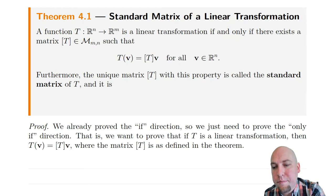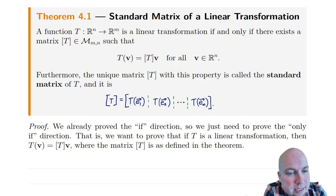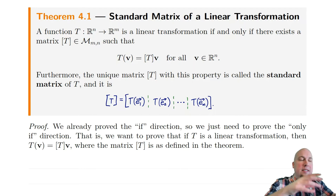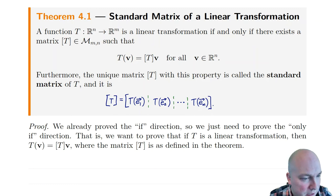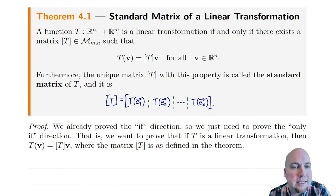The way to construct the standard matrix of T is to apply T to each of the standard basis vectors and then stick the results in as columns into a matrix. You compute T of E1, and that becomes the first column of your standard matrix. Then T of E2 becomes the second column, and so on, all the way down to T of En, which becomes the last column. The claim is that if you construct this matrix, then applying T to a vector is the same as multiplying this matrix by that vector — you always get the same answer, no matter what vector V you choose.